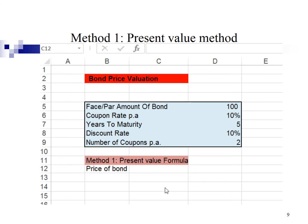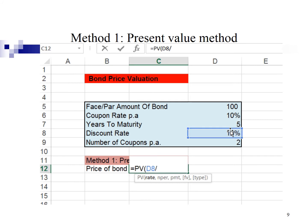Let me show you how to calculate bond price using method 1, the present value method. Type equal present value, open bracket. Rate refers to the discount rate. I'm going to point 10% divide by 2. Comma.